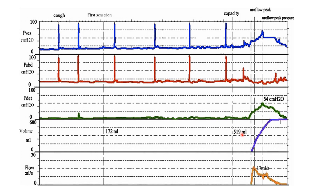The filling phase is now completed and the person is ready for voiding — this is the micturition phase. As the patient initiates urination, the pressure rises up to 54 cm of water. Abdominal pressure increased when the patient strained but returned to normal. The vesical pressure rose and then returned to normal. The voided volume in this patient is 600 ml. The flow is 70 ml per second as the average flow rate, which is within normal levels.